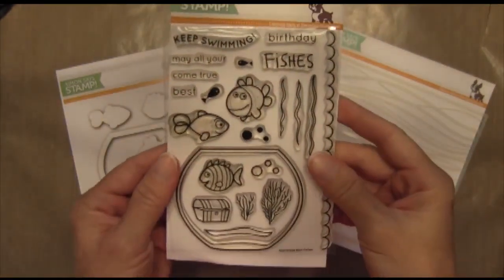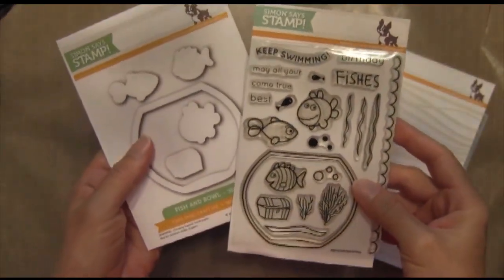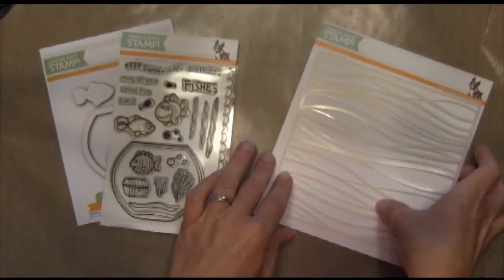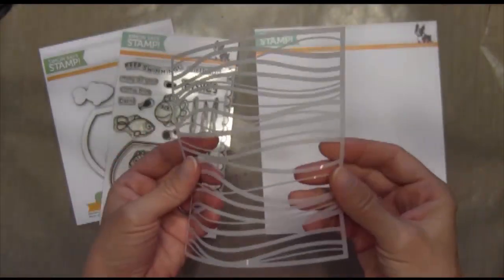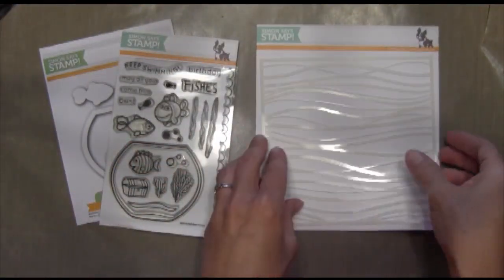I used the Simon Says Stamp Best Fishes stamp set. Such a cute little set and it comes with some matching dies and also this stencil, this wave stencil. It's a really nice high quality stencil.